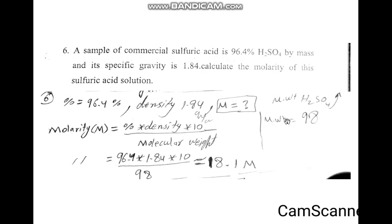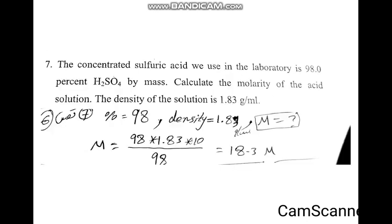The molar weight of H2SO4 equals 98. Here is the value of the molar weight. The concentrate of sulfuric acid used in the laboratory is 98% — this is the percent — and we need to calculate the molarity of this acid where the density equals 1.83 grams per milliliter.